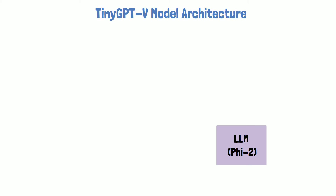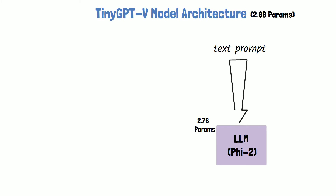The PHY2 model has 2.7 billion parameters, yet it beats much larger models. The LLM backbone contains most of TinyGPT-V's parameters, so using a small LLM such as PHY2 keeps TinyGPT-V small.